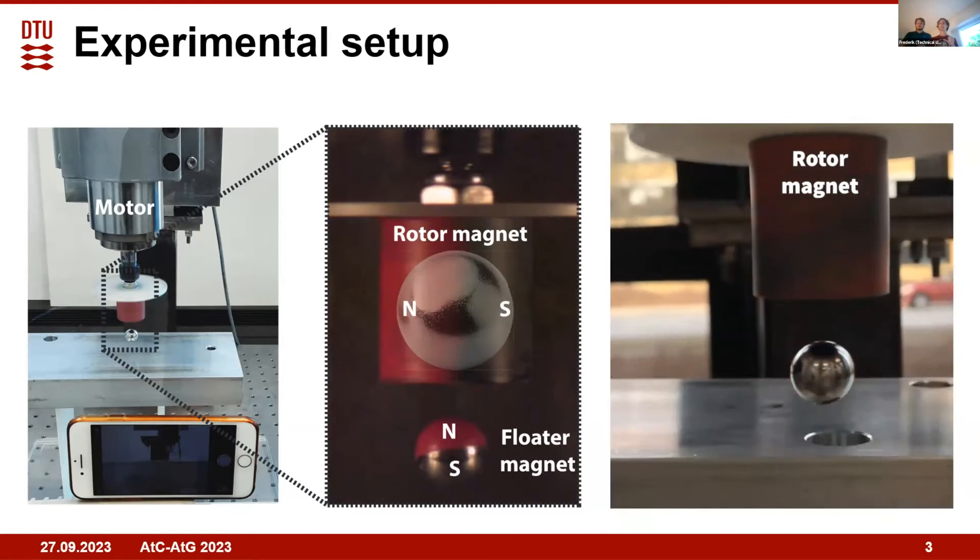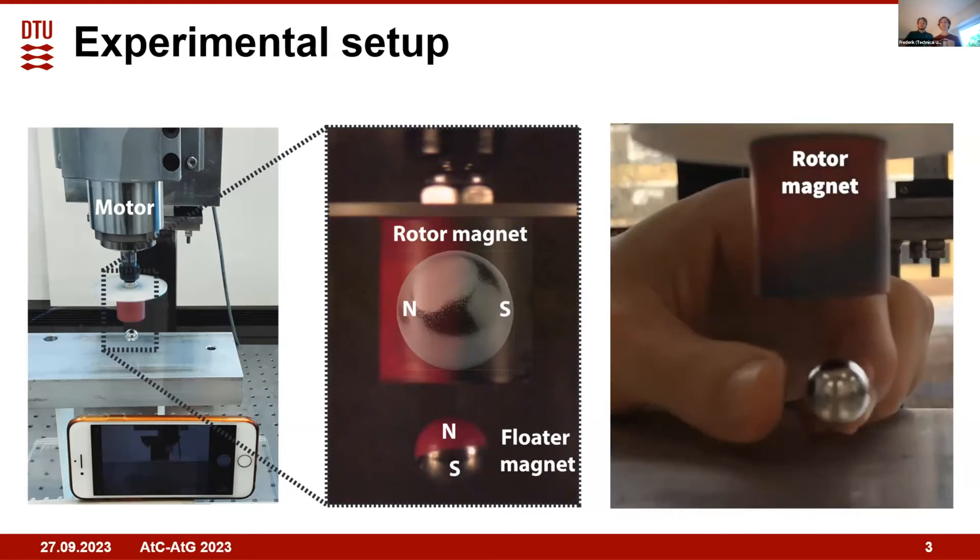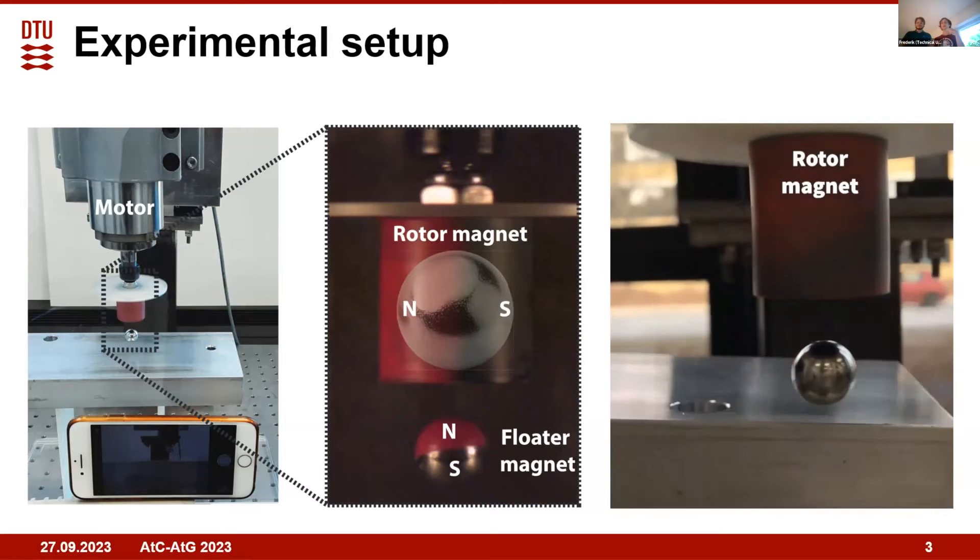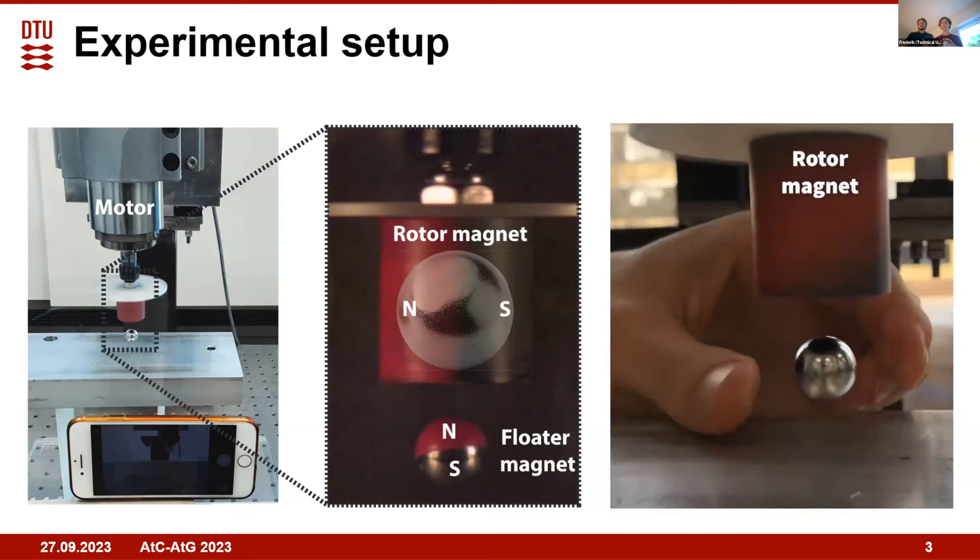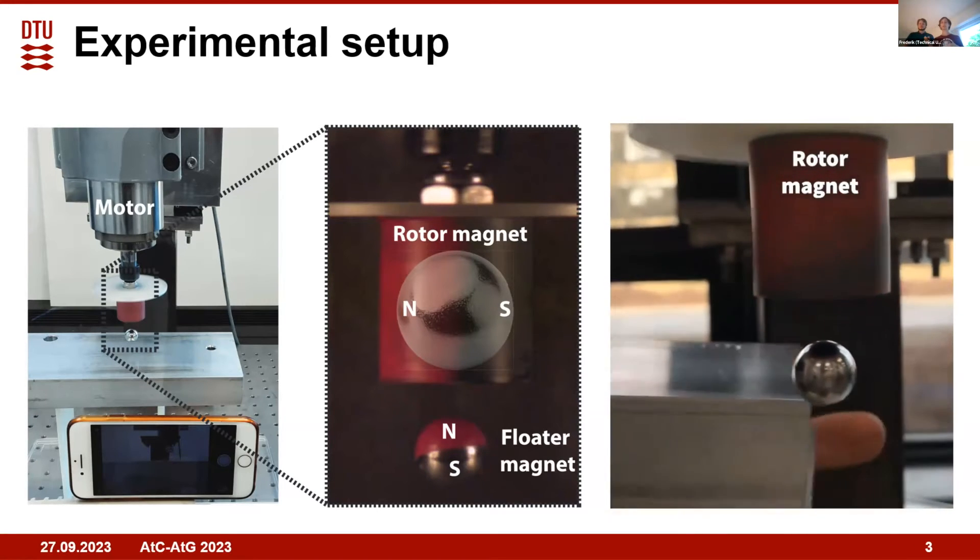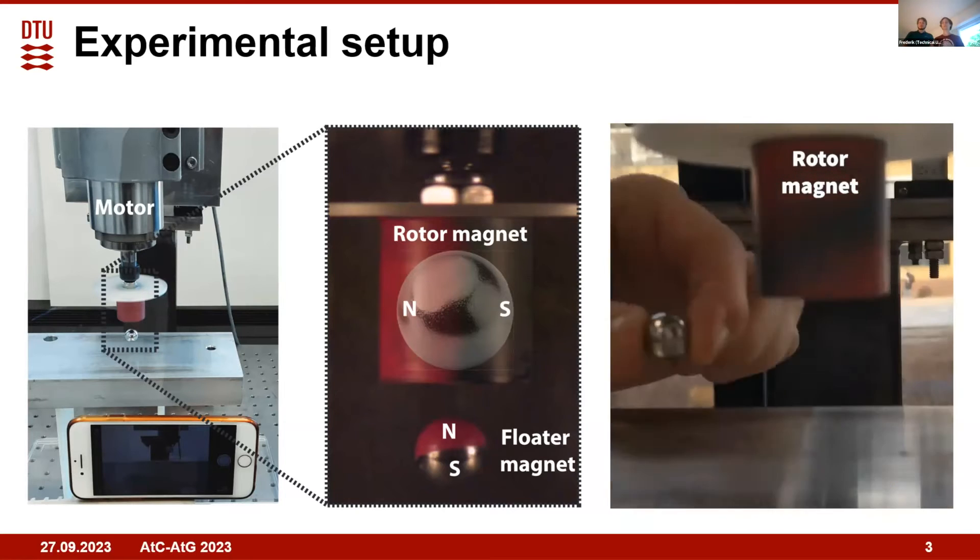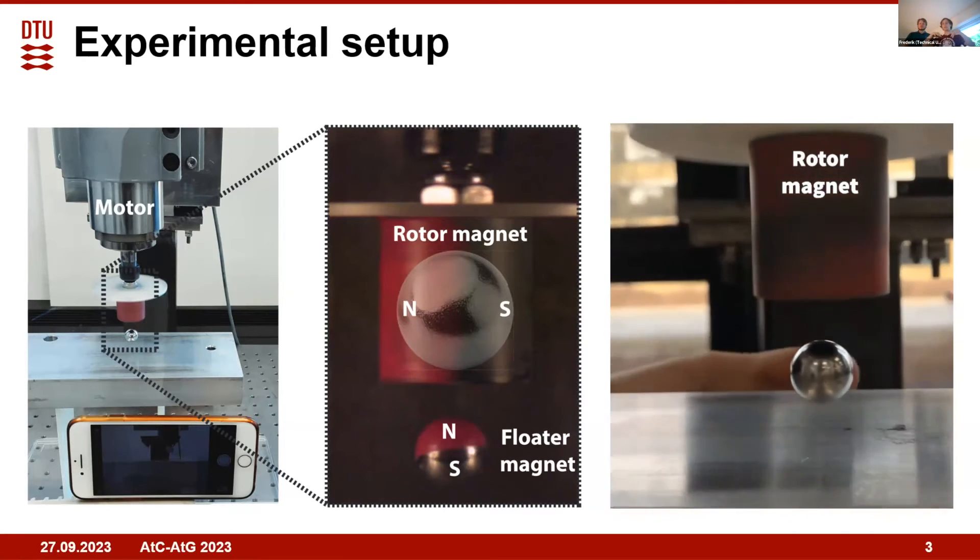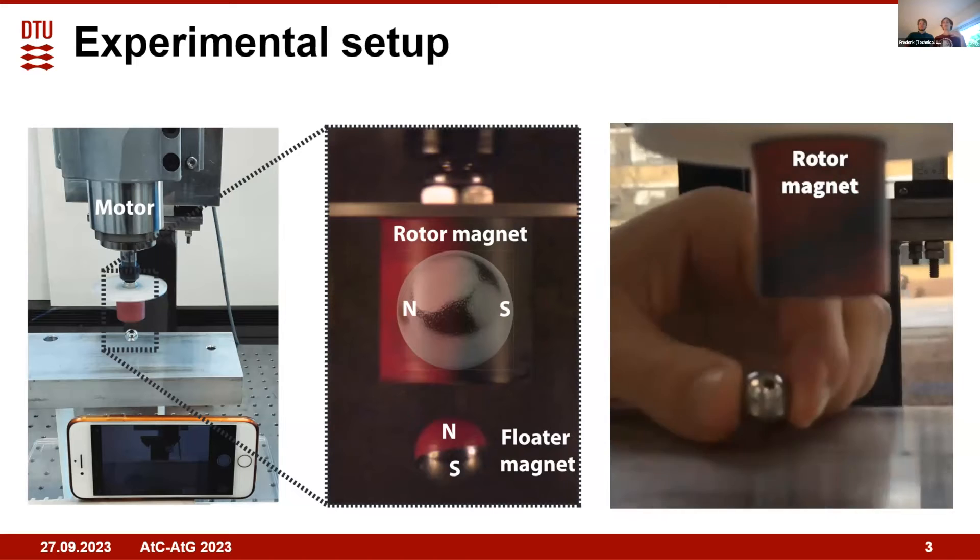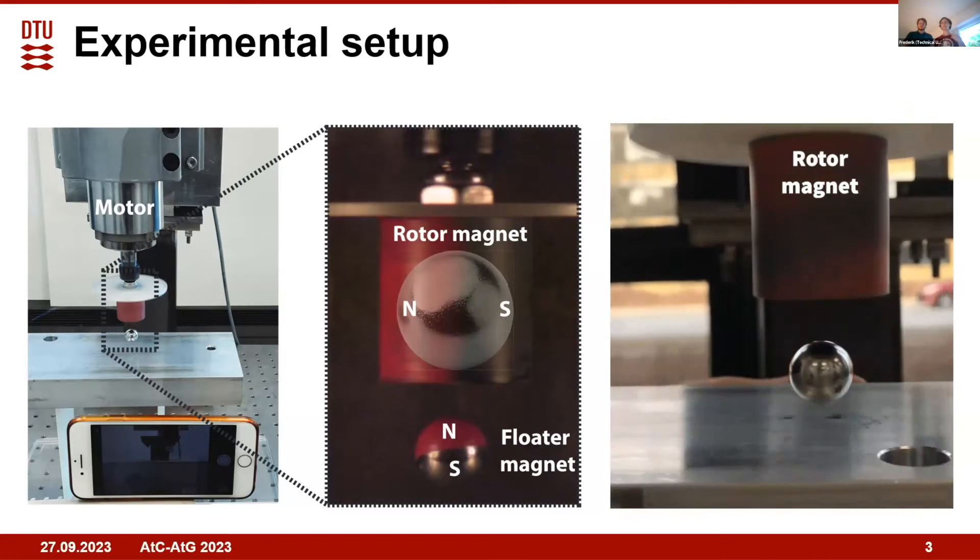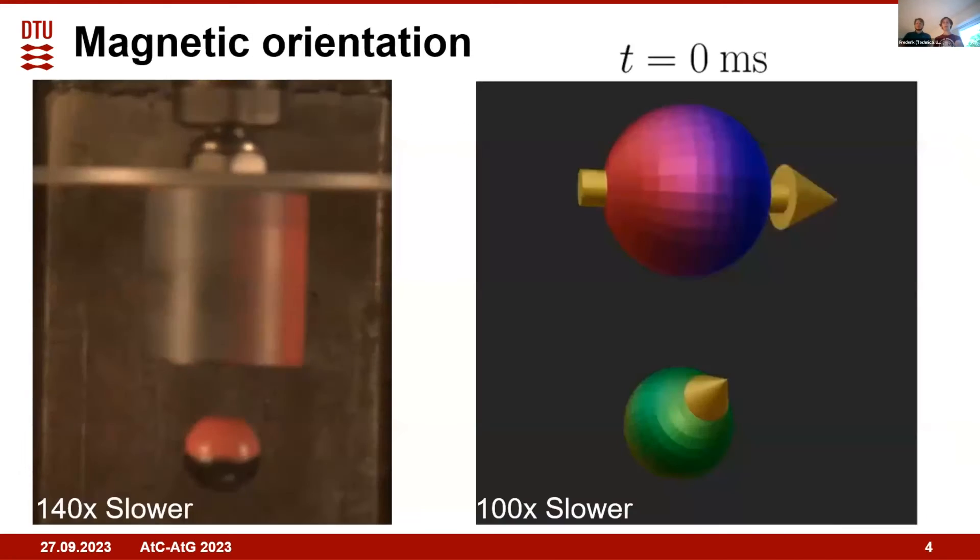In the video you see this aluminum plate we have underneath, and this is to provide eddy current damping in the free magnet that causes the oscillations to stabilize, thereby making the initial conditions more consistent. Using these experiments, where we have painted the north poles of both the rotor and floater magnet, we see that the floater magnet orientates almost vertically.